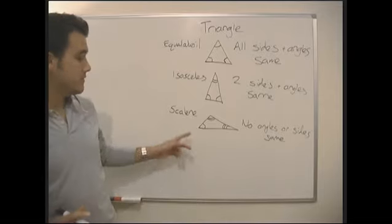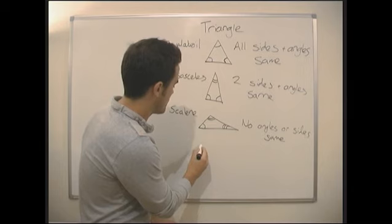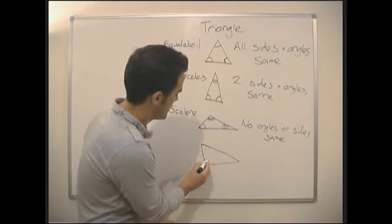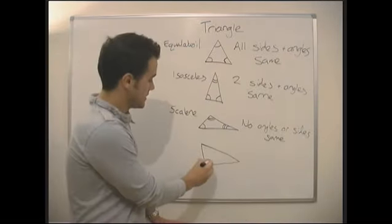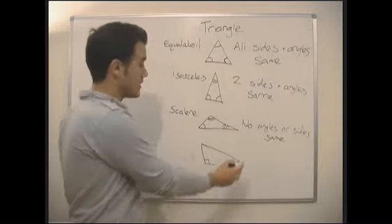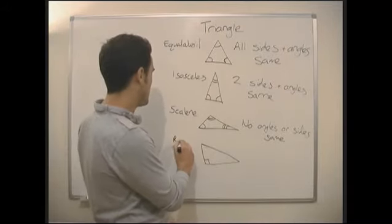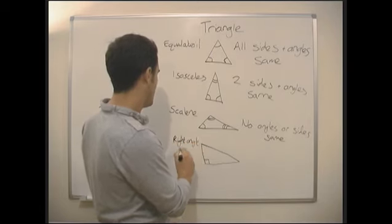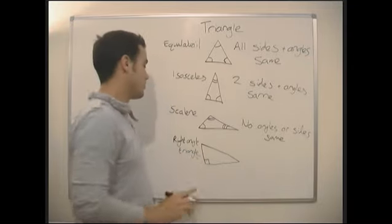Okay, and there's one special case of a scalene, which is a right-angle triangle. We'll be coming back to right-angle triangles later, because right-angle triangles are very interesting indeed. So here's our right-angle triangle. Basically, this is a scalene. It's none of the sides or anything the same. It just has a right-angle in it. Hence the name, a right-angle triangle.